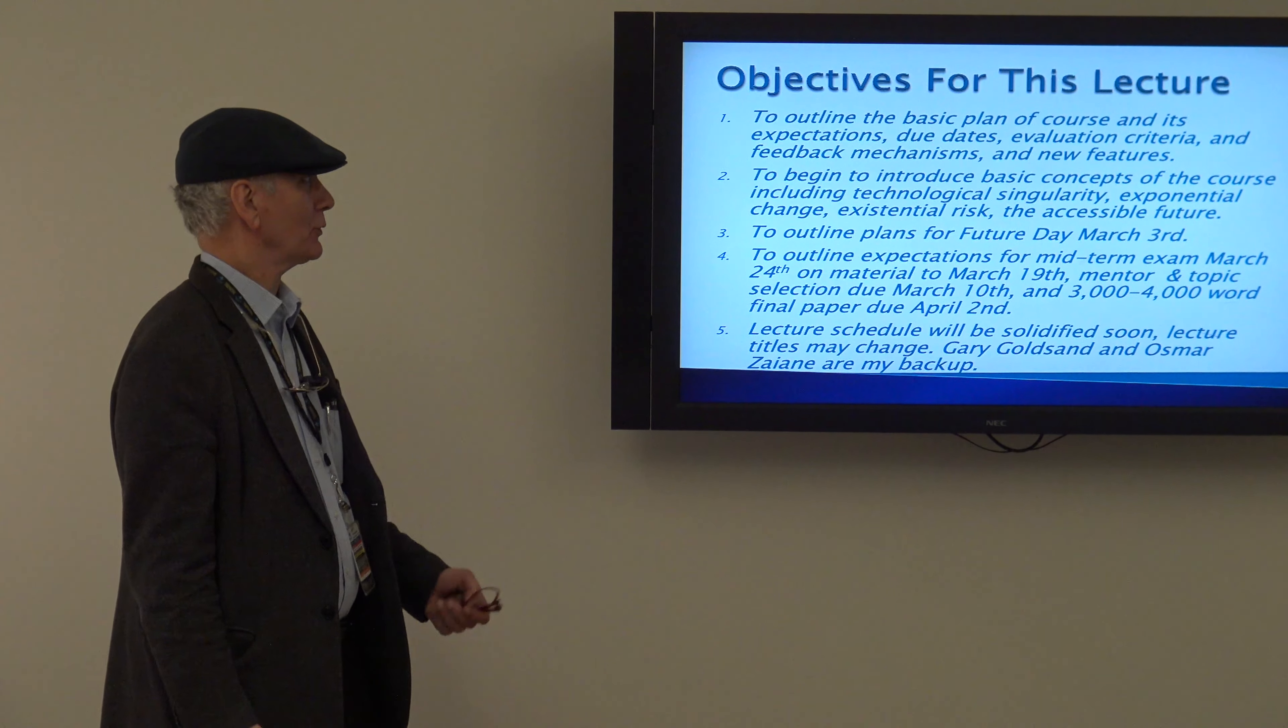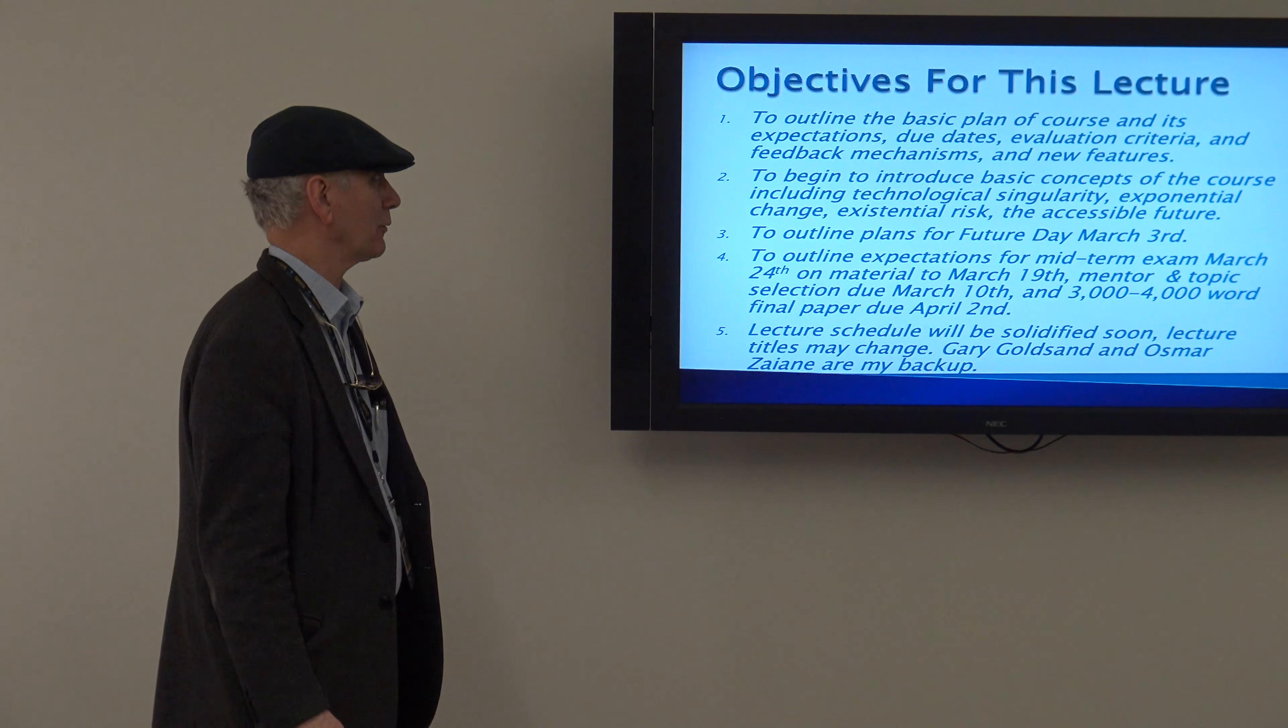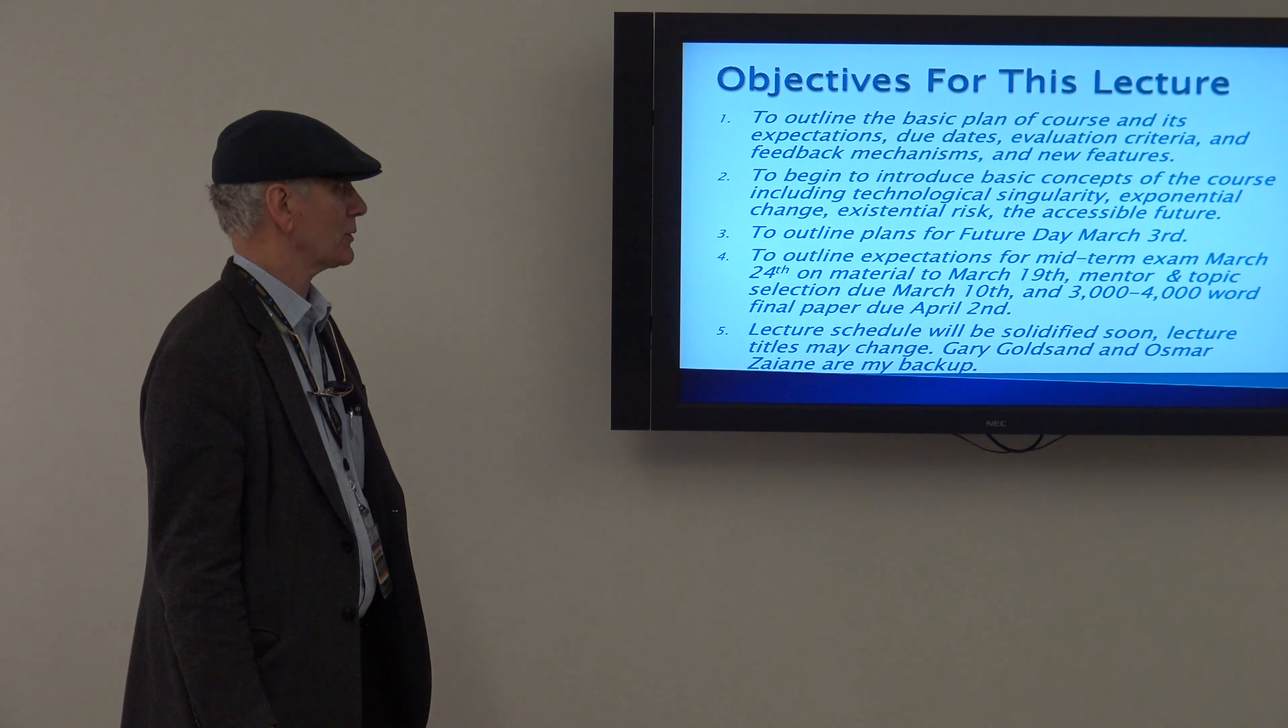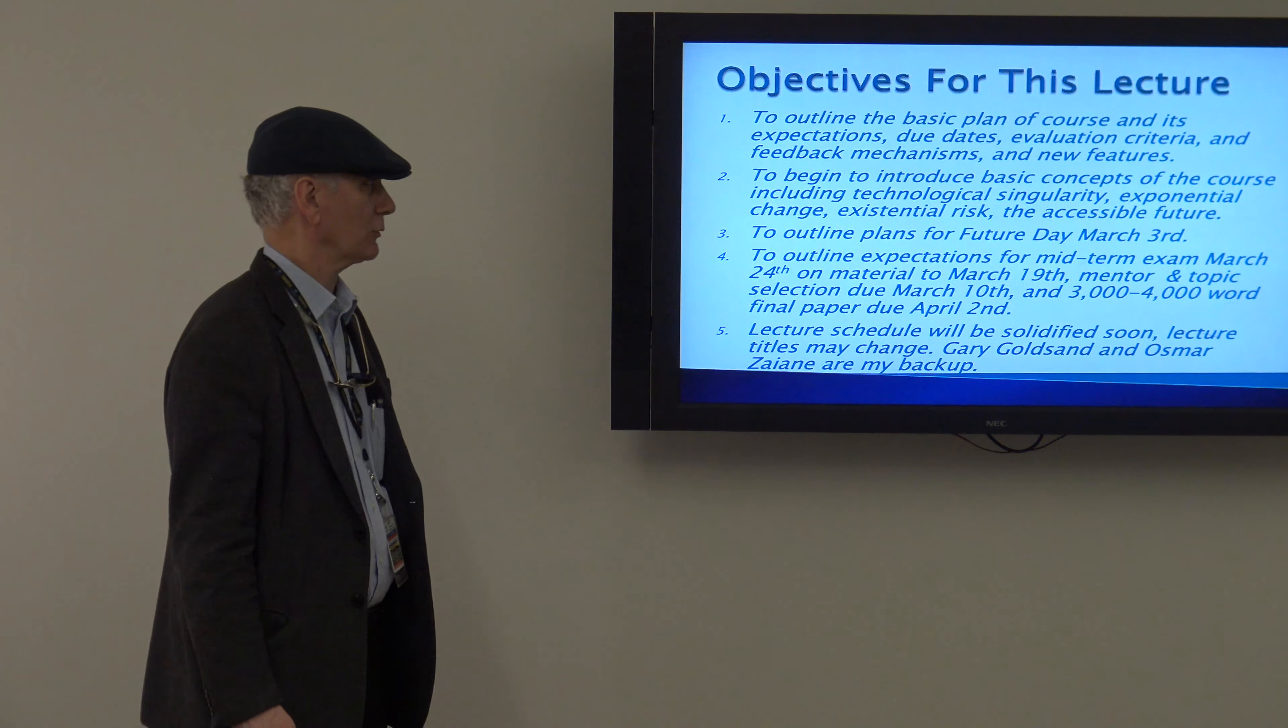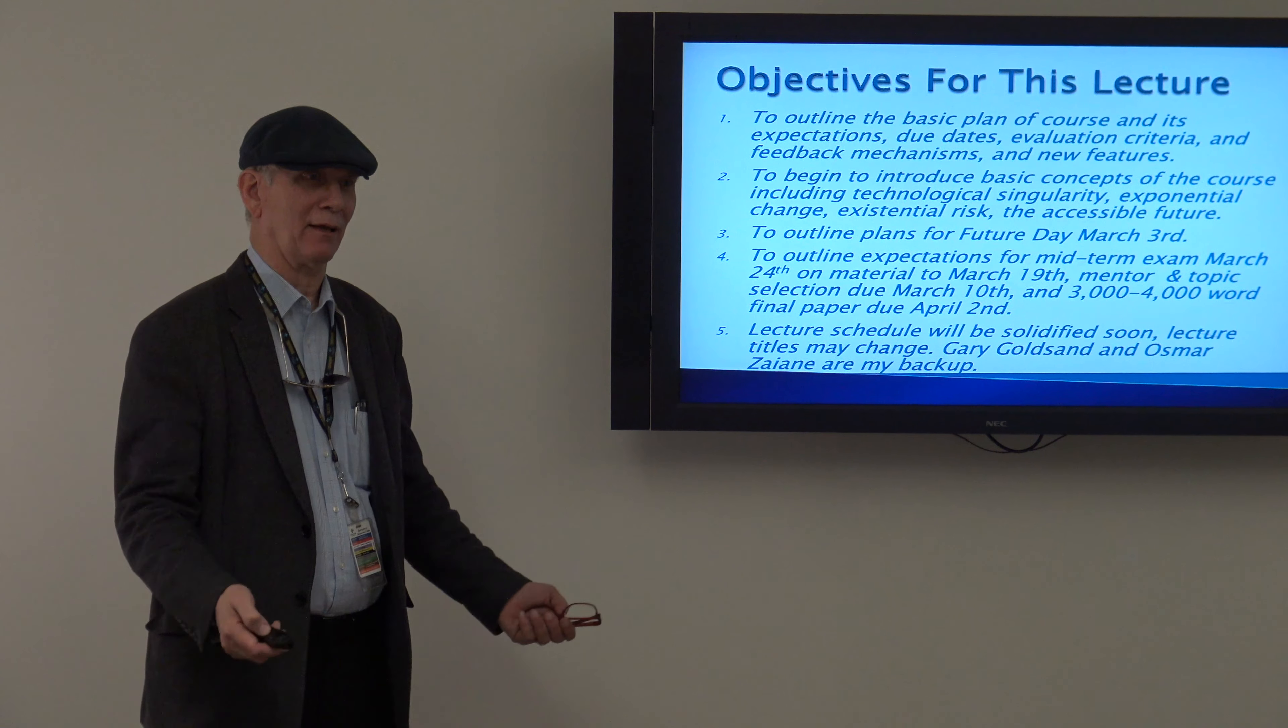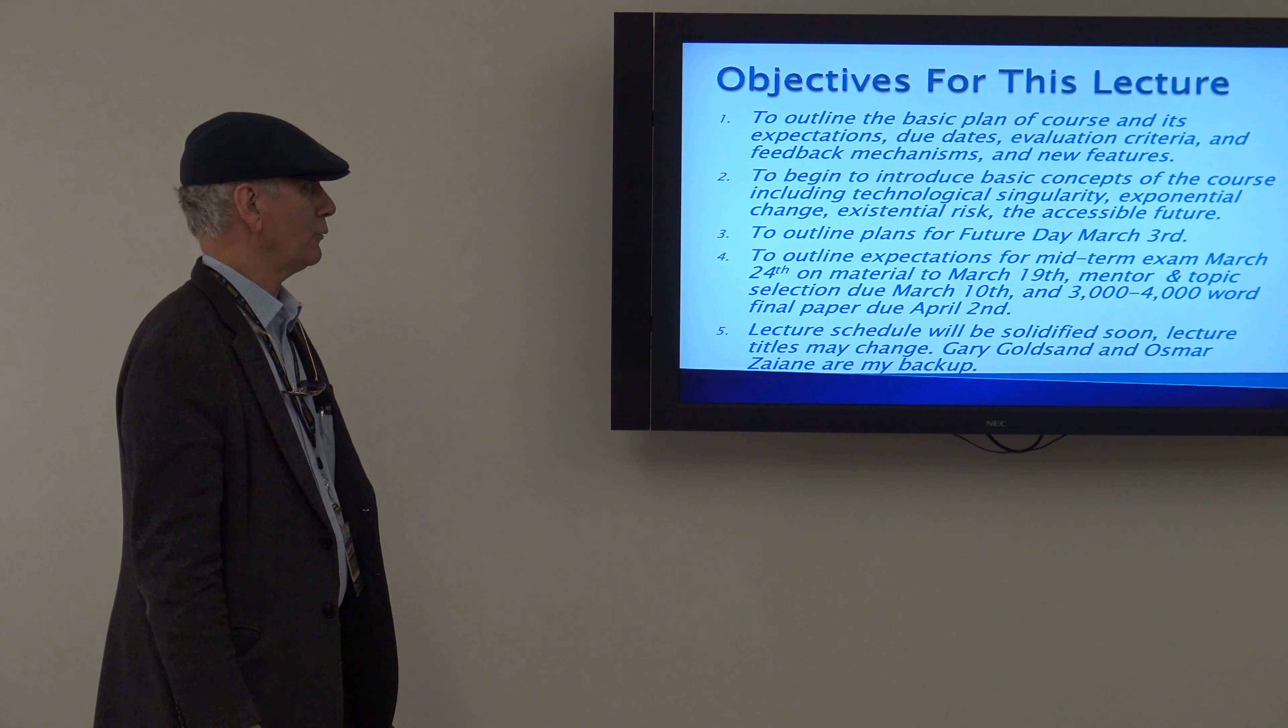The objectives of this first lecture is to outline the basic plan for the course - expectations, due dates, evaluation criteria, feedback mechanisms, and new features. We begin to introduce basic concepts like technological singularity, exponential change, existential risk, and the accessible future. Accessible future means a concept that's easy to understand, that doesn't require you to read 17 books.